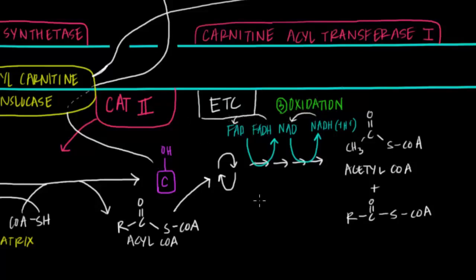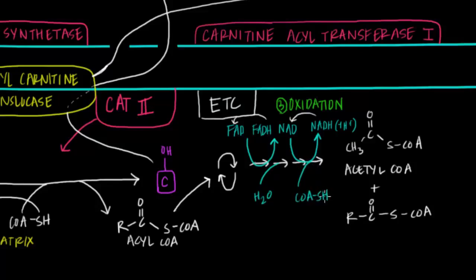As a couple of minor points: we need a source of oxygen to form the carbon-oxygen bonds in each subsequent acetyl-CoA molecule produced, so there is an insertion of water somewhere along these four steps, as well as an insertion of an additional coenzyme A molecule for each subsequent acetyl-CoA group formed. Before we talk about regulation, I want to mention the term beta-oxidation, which sounds intimidating but is actually quite simple.